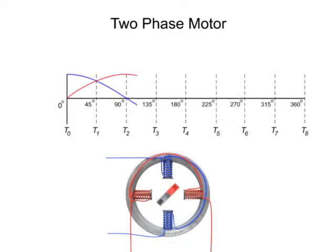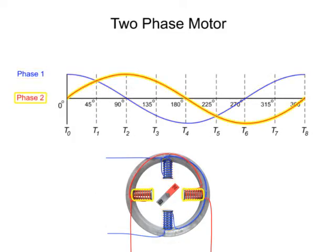Let's follow the amount of current applied to the phase 1 and phase 2 stators at various time intervals, along with their respective sine waves. The 90 degree offset between the two sine waves causes the polarity of the stator pairs to change in a coordinated fashion to smoothly turn the magnetic rotor.